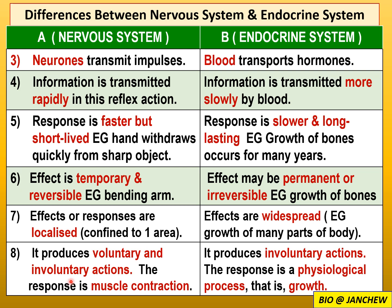System A produces both voluntary and involuntary actions — the reflex action in the diagram is involuntary, but the nervous system also produces voluntary actions such as talking and kicking a ball, which are controlled by the conscious mind. System B produces only involuntary actions — for example, adrenaline stimulates the increase in heartbeat rate, which is not under the control of the conscious mind or will. That ends today's video. Thanks for watching — please share, comment, like, and subscribe. See you in the next video!